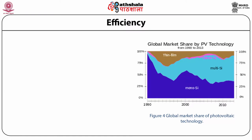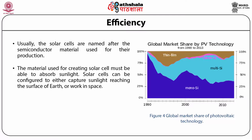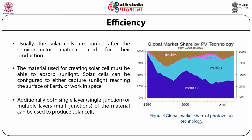We will next discuss the timeline of development of material. Usually, solar cells are named after the semiconductor material used for production. The material used must be able to absorb sunlight. Solar cells can be configured to capture sunlight at Earth's surface or in space, and both single junction and multi-junction configurations can be used. Figure 4 shows the global market share of photovoltaic technology. We can see that in earlier years, around the 1990s, thin film was more successful in obtaining high efficiencies.